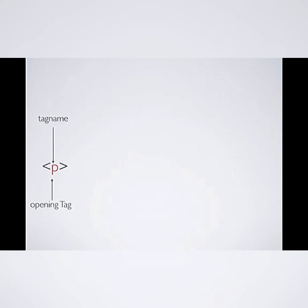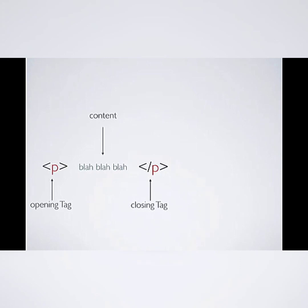And you're going to have another tag, similar, at the end, called a closing tag. This tag has an extra slash — this only goes in a closing tag. And in the middle, you put your content. Whatever goes in the paragraph, you put it right in the middle, and that makes it a paragraph.